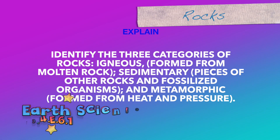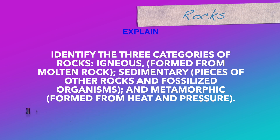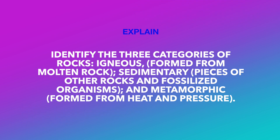Identify the three categories of rocks: igneous, formed from molten rock; sedimentary, pieces of other rocks and fossilized organisms; and metamorphic, formed from heat and pressure.